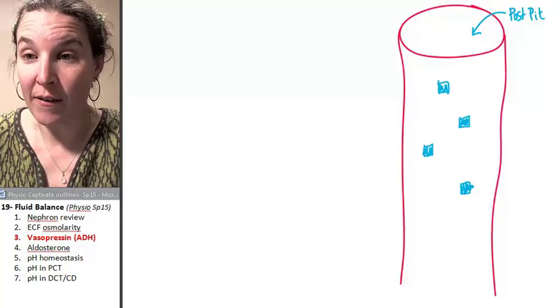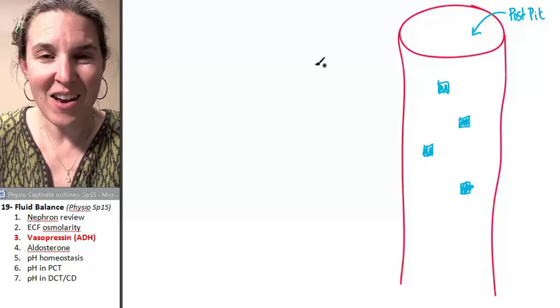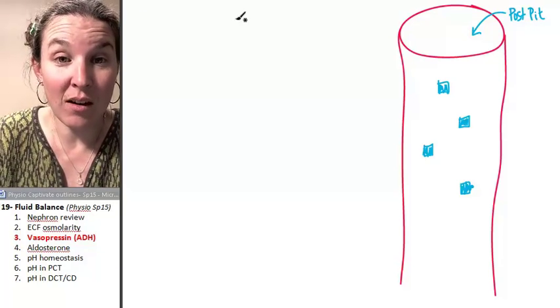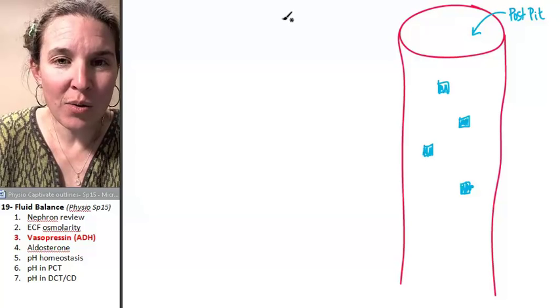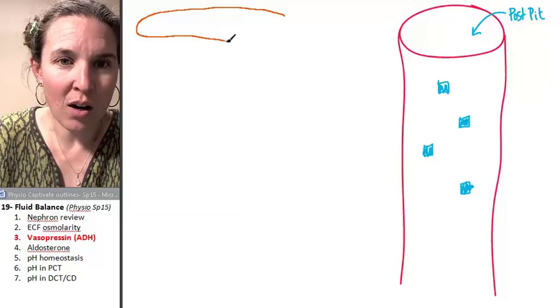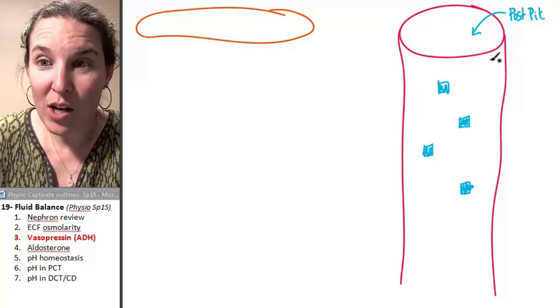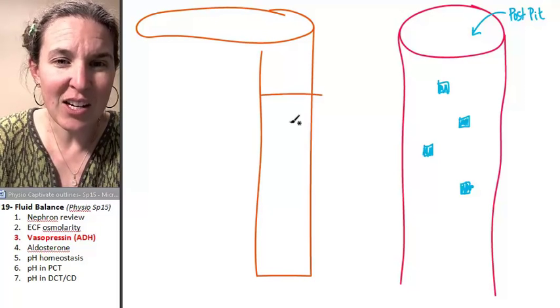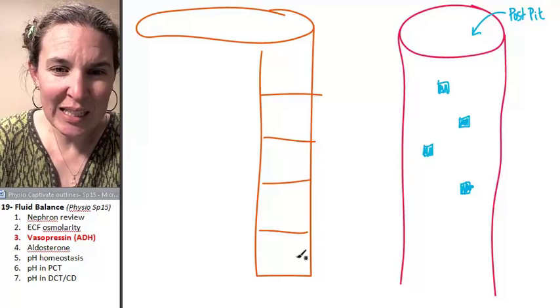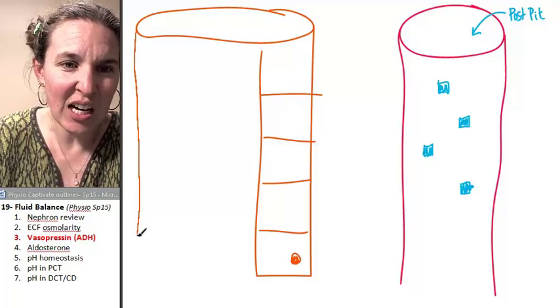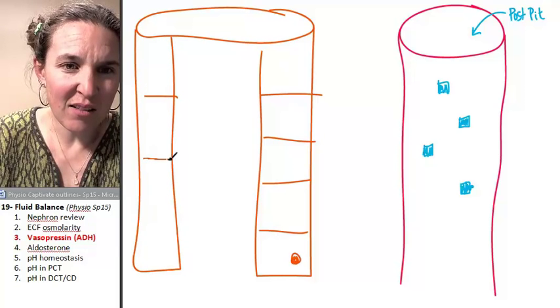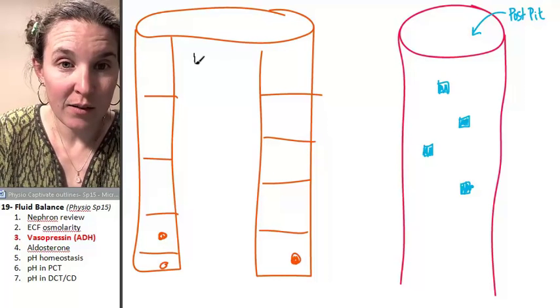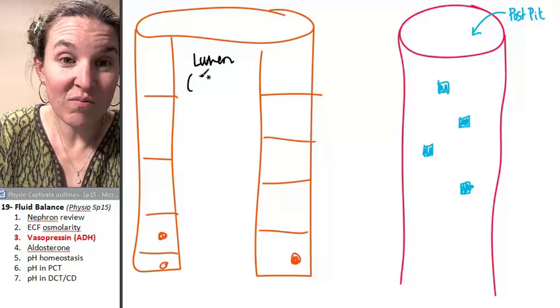We are going to have filtrate. We're going to have nephron. Let's just throw this into the collecting duct. This can happen in the collecting duct or the distal convoluted tubule. This is a tubule. And we know that tubules are lined with cells. So, let's just call this the collecting duct. And here's the cells that are lining. And they've got nuclei. So, this is my lumen. And what's in there? Filtrate.